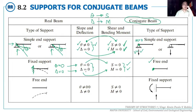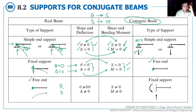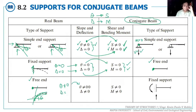What if the real beam has a free end? At a free end, the slope is not equal to zero — the elastic curve deflects and the tangent line makes an angle with the horizontal. The deflection at the free end is also not equal to zero, since the beam deflects when loaded.